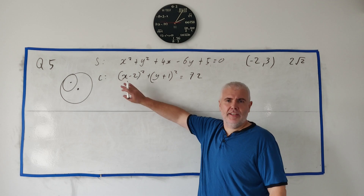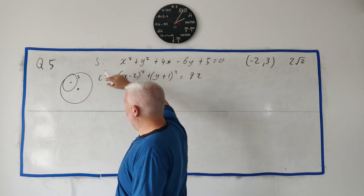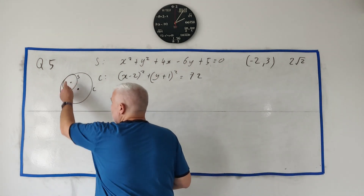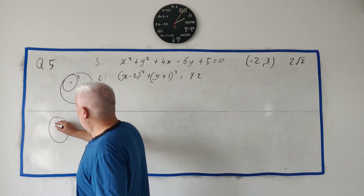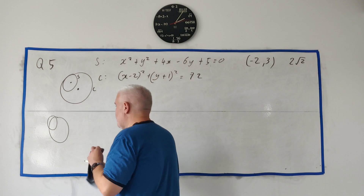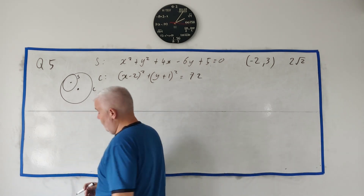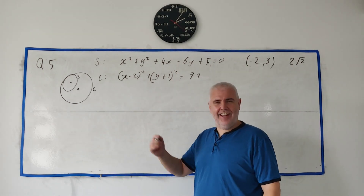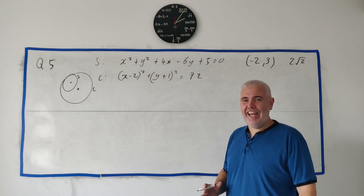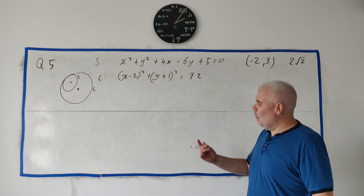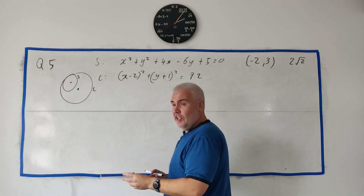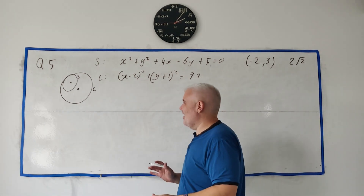In part 2 they add an extra circle called C and draw us a picture. The first circle S is the small one; this new circle C is a larger one. They simply ask us to show that these circles touch internally. When they say 'touch' they mean just one intersection — not overlapping, but exactly touching at one point. There's one nice clean way to do this that I can think of.